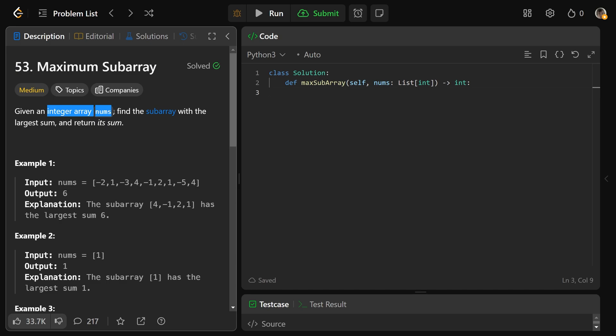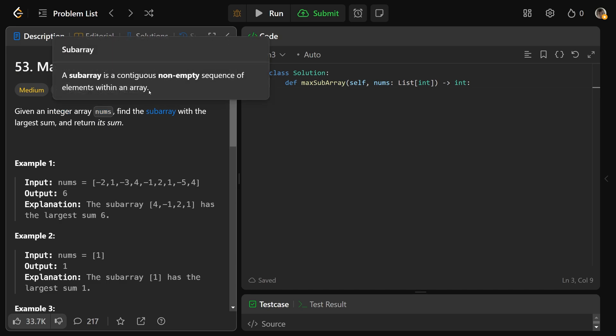We're given an integer array nums, and we need to find the subarray, where a subarray is a contiguous, non-empty sequence of elements. So the subarray with the largest sum, and you just need to return its sum.